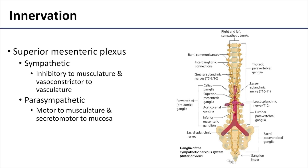The superior mesenteric plexus innervates the jejunum and ileum and is composed of both sympathetic and parasympathetic fibers. Sympathetic fibers are derived from thoracic splanchnic nerves, while the parasympathetic fibers are derived from the vagus nerve — so we're still in the proximal portion of the GI region where the vagus is involved. The sympathetic innervation is inhibitory to smooth muscle contraction and is a vasoconstrictor to vasculature. The parasympathetic innervation is motor to smooth muscle — think rest and digest — and is also secretomotor to the mucosa of the small intestine.